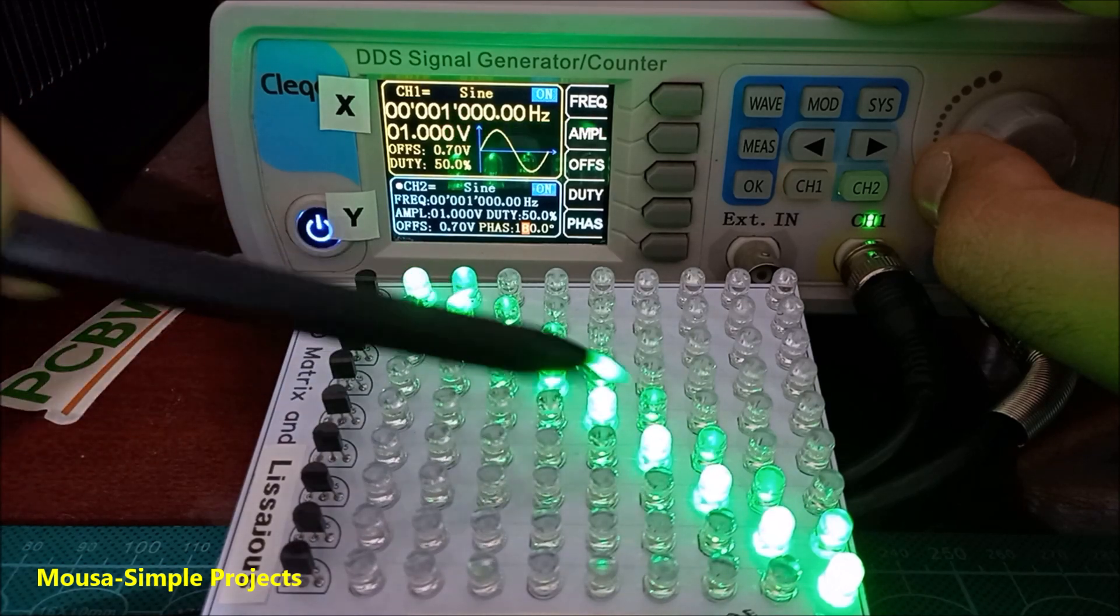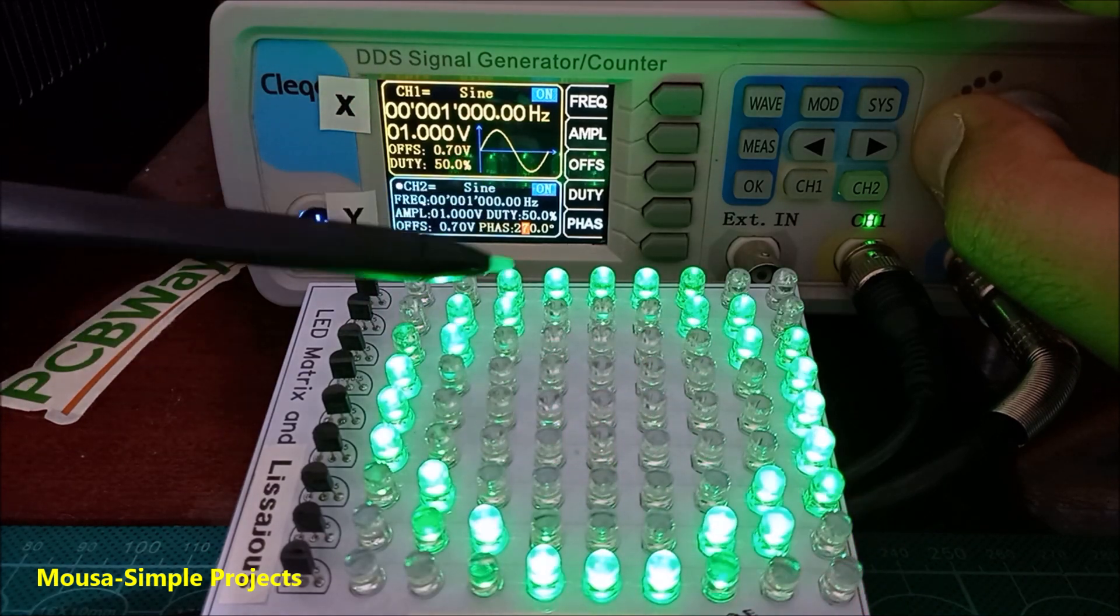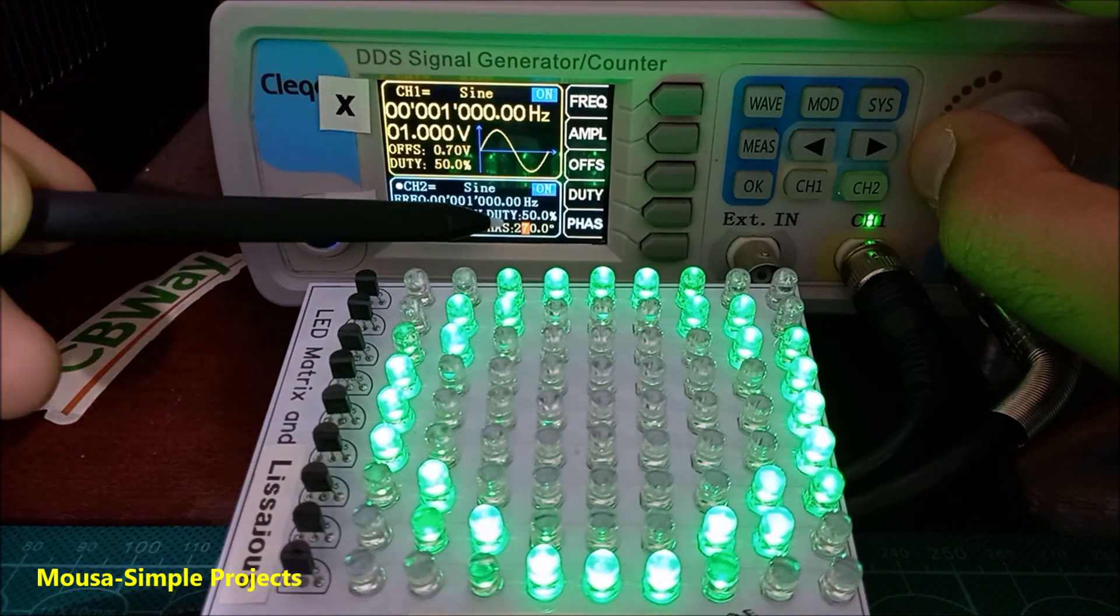At 180 degrees, we got a straight line again, but this time in the other direction. At 270 degrees, we got another circle, and so on.